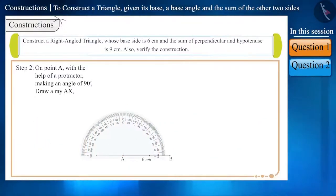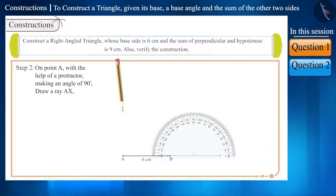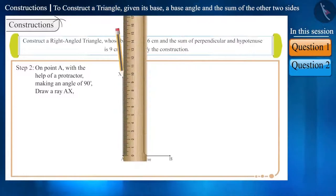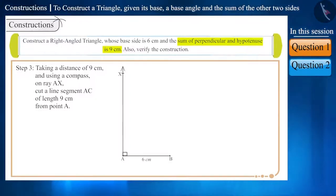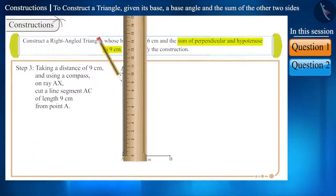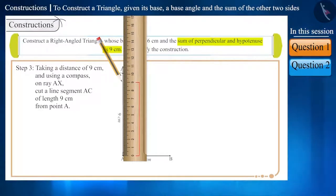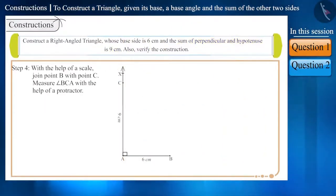Step 2: Now, on point A, with the help of a protractor, making an angle of 90 degrees, draw a ray AX. Step 3: Taking the sum of the lengths of perpendicular and hypotenuse, which is 9 cm, and using a compass on ray AX, cut a line segment AC of length 9 cm from point A.